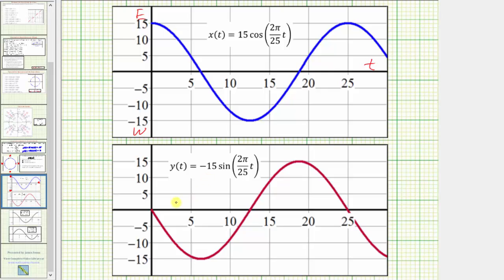And then looking at y of t, notice how this is the sine function reflected across the horizontal axis because of the negative with an amplitude of 15 and again a modification of the period. But because y controls the direction north and south, let's label the positive vertical axis north and the negative vertical axis south.